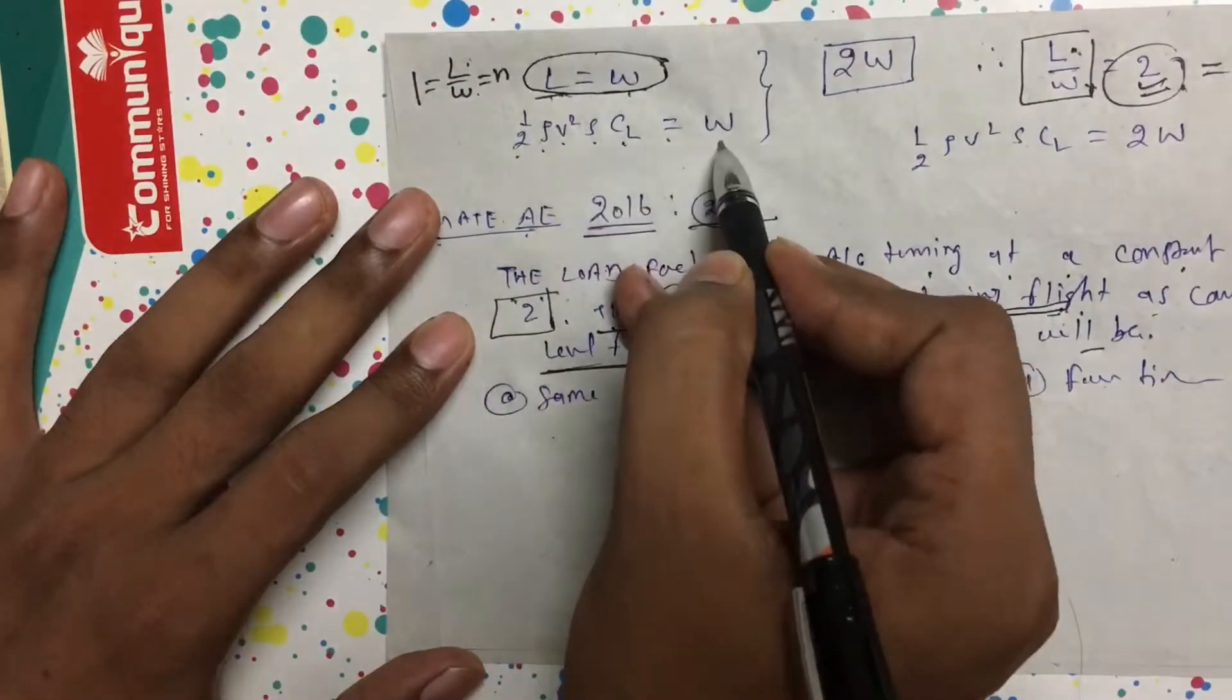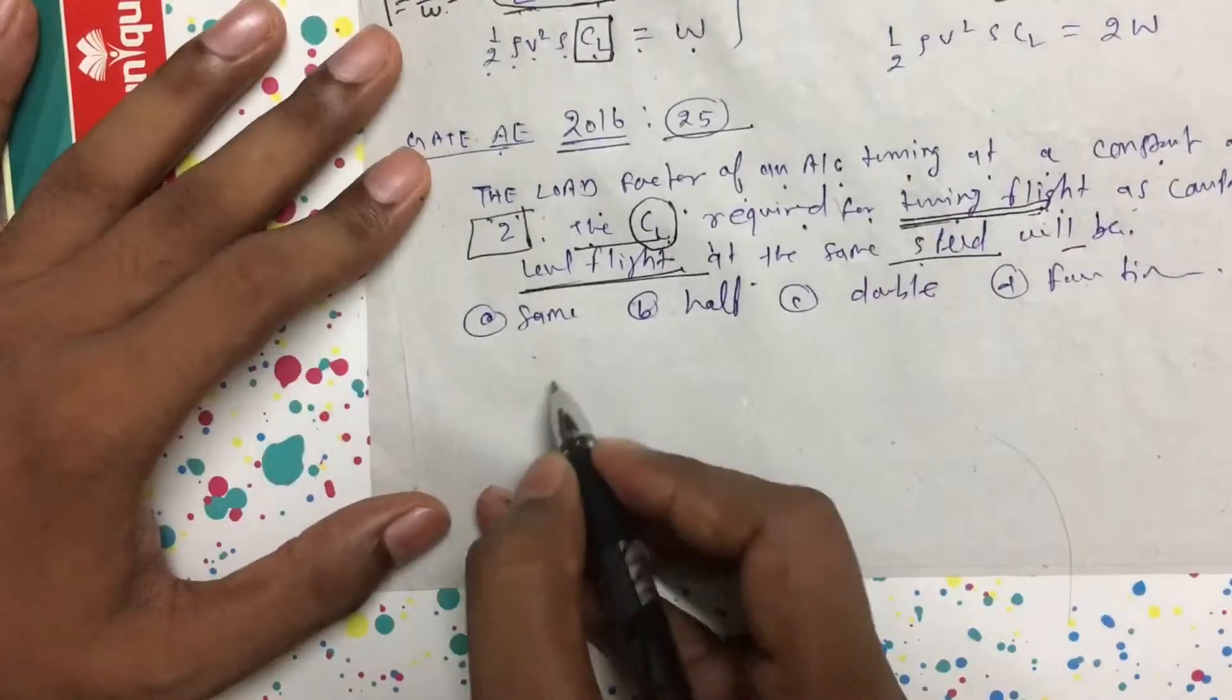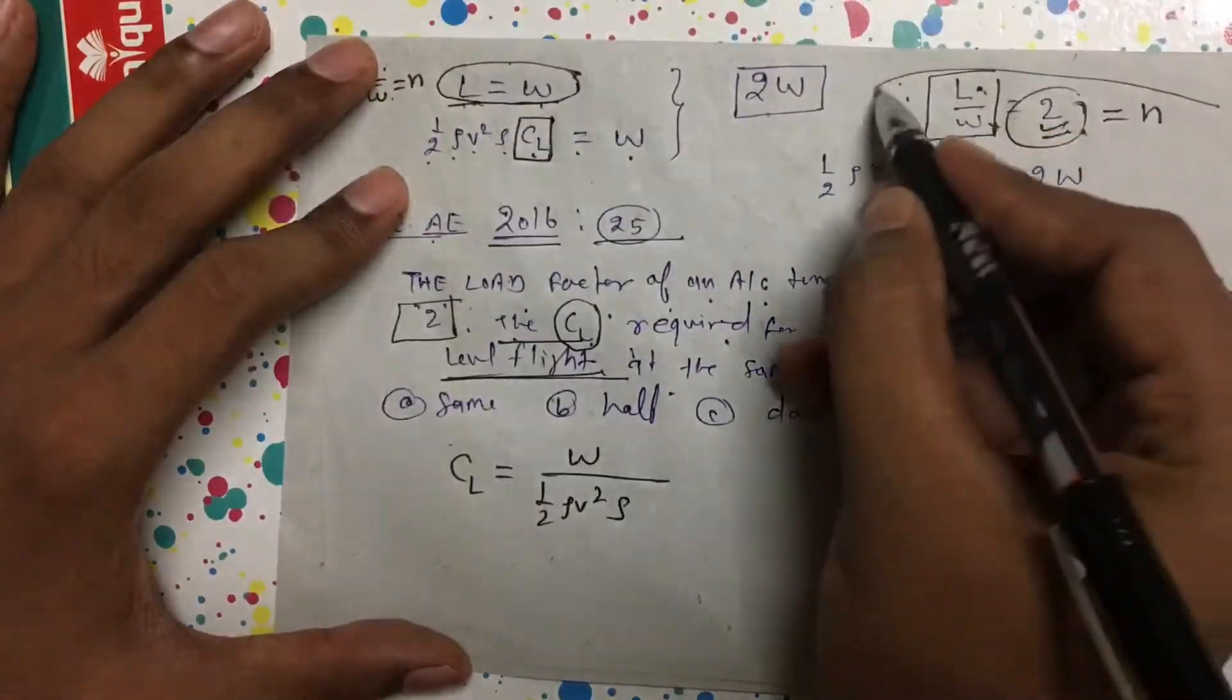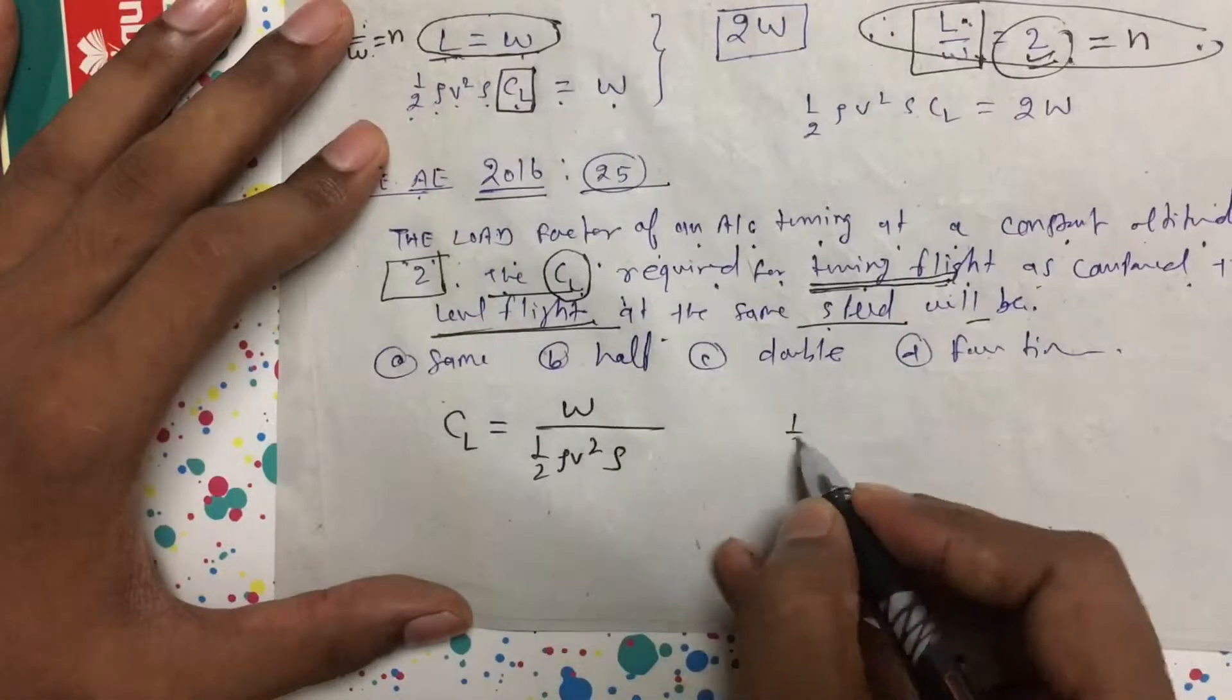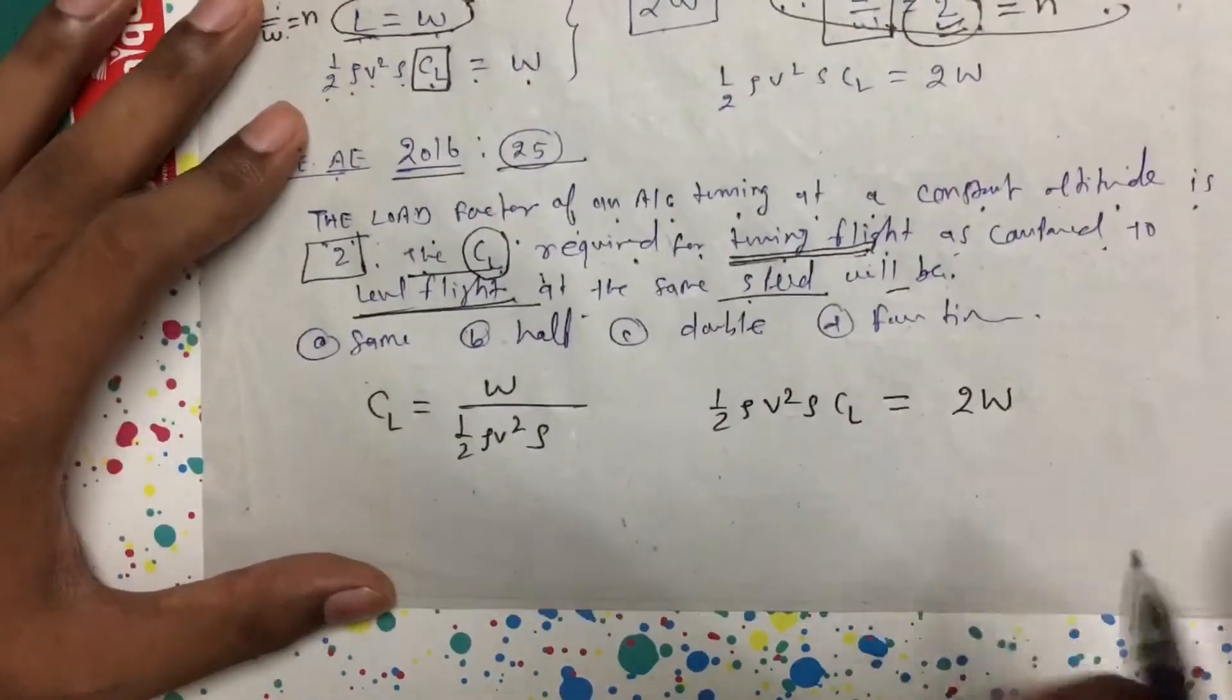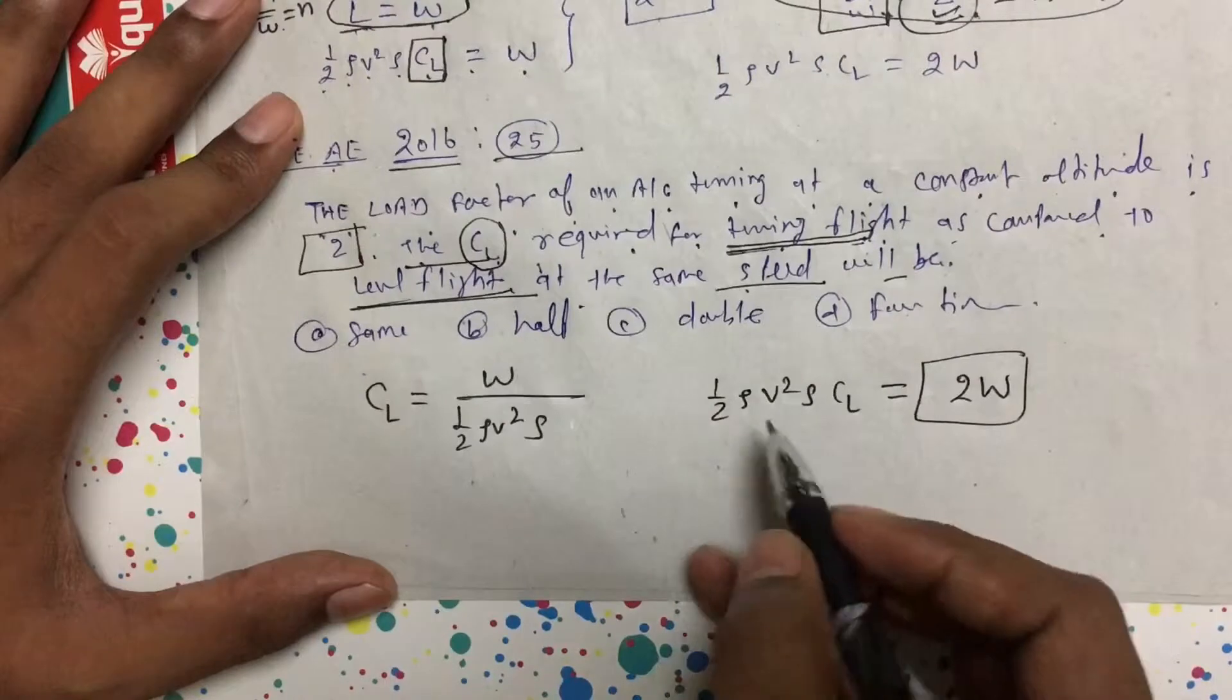From here, you find the CL value: CL will be W divided by ½ρV²S. In the turning case, ½ρV²S·CL, we have to equate with 2W because lift became 2 times the weight.